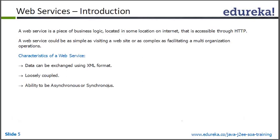What is a web service? A web service is a service provided on the internet. Some other company or organization is providing some facility on the internet, and you can connect to it via HTTP from your program and access it.